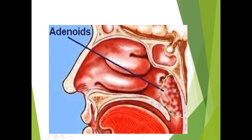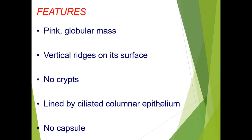You will have to do something for it — medical treatment or mostly surgical treatment is needed. The adenoid is a pink globular mass with vertical ridges on its surface, but there are no crypts, and it is lined by ciliated columnar epithelium and has no capsule. This is the difference between adenoids and tonsils: tonsils contain crypts and capsules, but adenoids have neither.